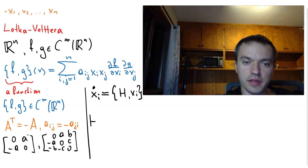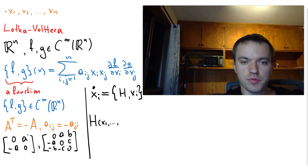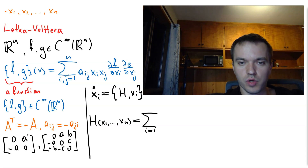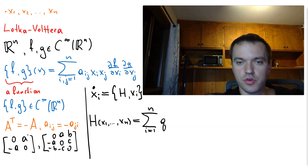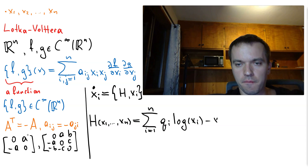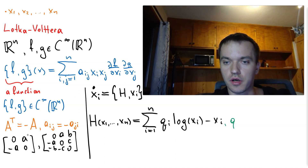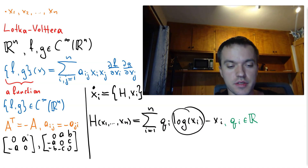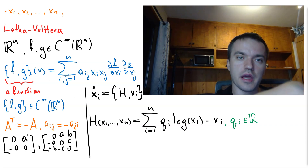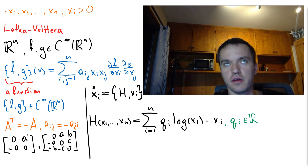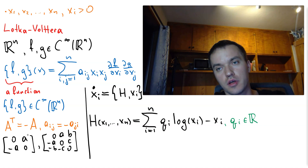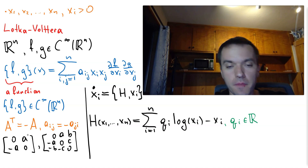In this particular case, the Hamiltonian H(x1, ..., xn) is defined as the sum from i=1 to n of: q_i times log(x_i) minus x_i. Here q_i are real number parameters. Since x_i appears under the logarithm, we need all x_i to be positive — so we're working in the part of R^n where all variables are positive, i.e., the first octant in 3D or the first quadrant in 2D.